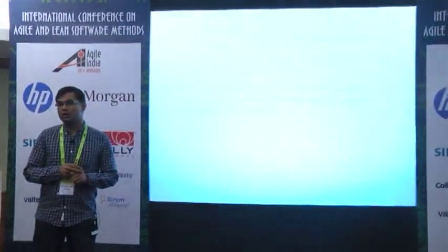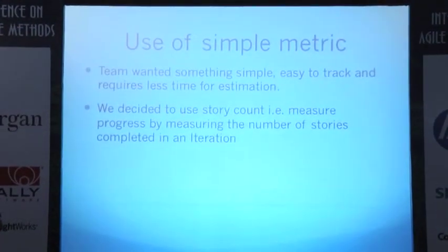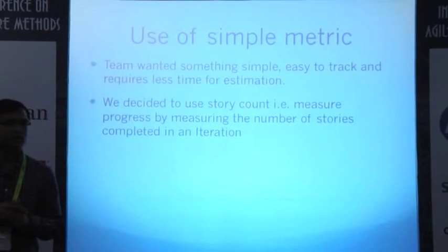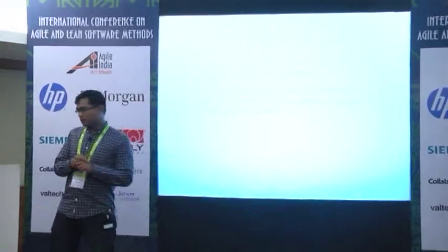So what did we do? We were asked to build a mobile application for an insurance company so that users can buy car insurance on mobile. The product owner was very keen to understand how much time and effort it would take to build this MVP scope. We decided not to use story points for estimation. But then what to do? How can we predict how many iterations it will take to complete this? We wanted something simple, something that can help us track easily and require less time in estimation. So we went ahead and started using story count — measuring progress by the number of stories completed in an iteration rather than story points completed.